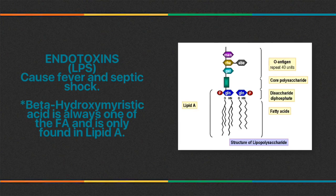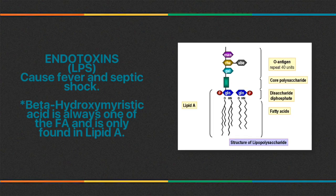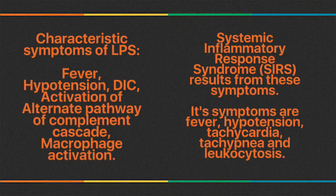Lipopolysaccharide, or endotoxin, is an integral part of gram-negative bacteria's cell wall. It causes fever and septic shock. Beta-hydroxymyristic acid is always one of the fatty acids and is only found in Lipid A. The structure of endotoxin is composed of O-antigen, core polysaccharide, disaccharide, diphosphate, and fatty acids. The disaccharide, diphosphate, and fatty acids make up Lipid A, which is the pathogenic part.